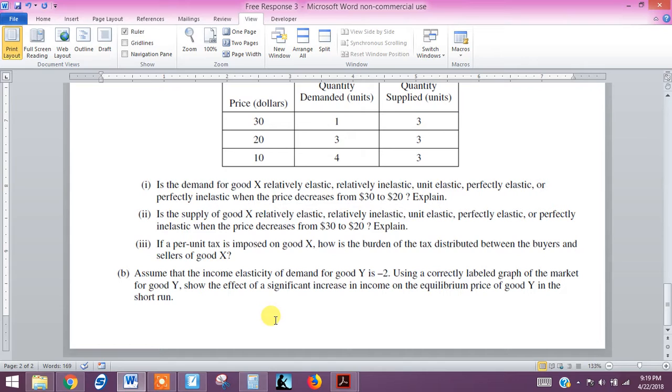It has an income elasticity of a negative—that's important—negative 2. And we want to use a correctly labeled graph of the market for good Y to show the effect of an increase in consumer income on the equilibrium price of good Y.